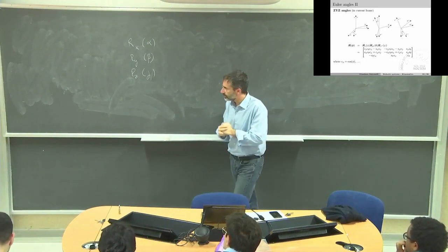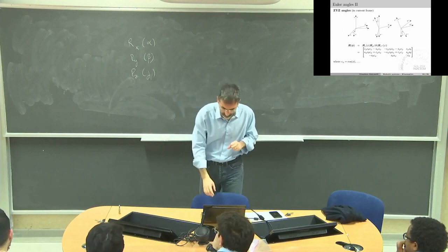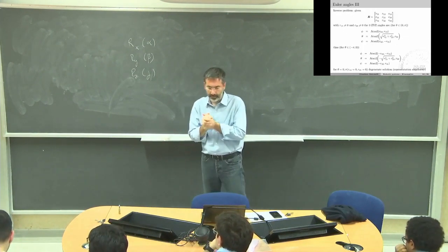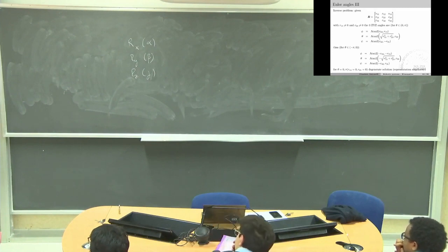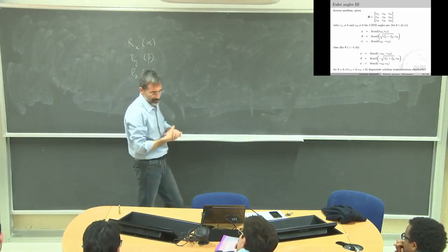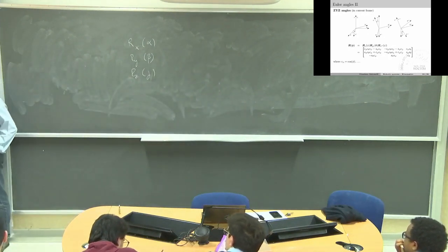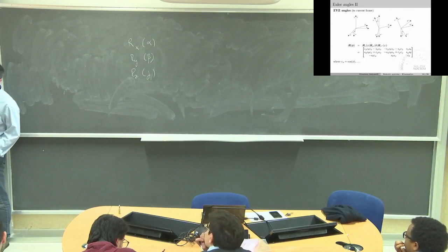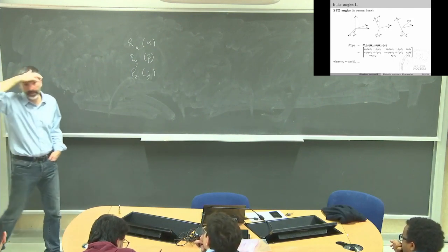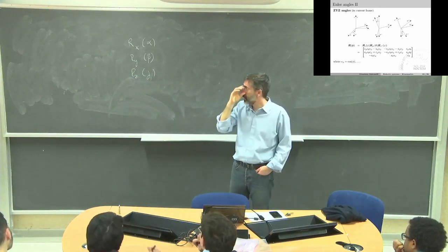If I do have a rotation matrix and from it I want to extract the three ZYZ angles — the so-called inverse problem — I have nine numbers and I want to extract the angles. I look at the rotation matrix: I have cosine theta, I can apply the arc-sine. Then I have cosine phi times sine theta, and sine phi times sine theta. I can make the division between those two numbers and I have the tangent of phi, then apply the inverse tangent function to get the value of phi.